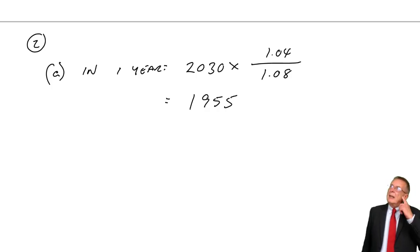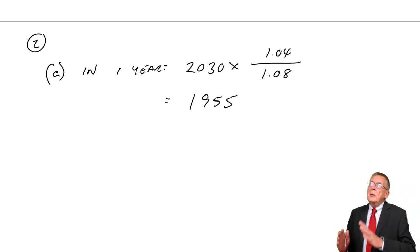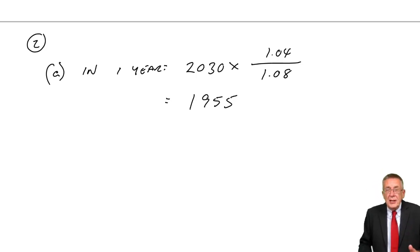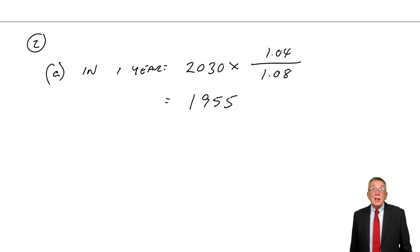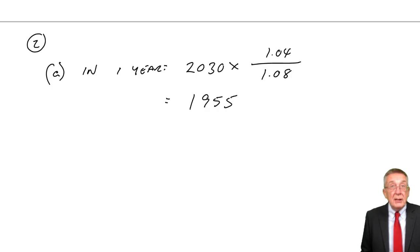Now, what does that mean? Does the pound strengthen or weaken? At the moment, the pound will buy 2,030 yen. In a year's time, it's only going to buy 1,955 yen. It'll buy fewer yen, which means the pound is weaker or the yen is stronger.